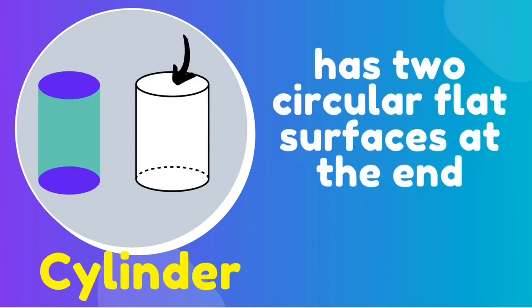Next is the cylinder. It has two circular flat surfaces at the end.